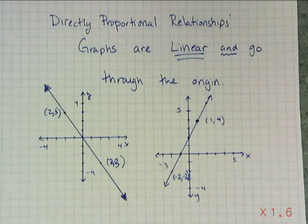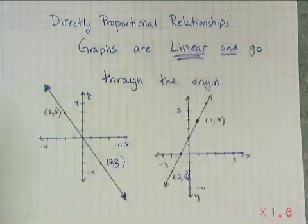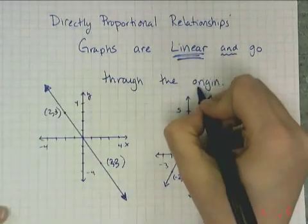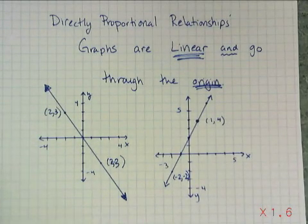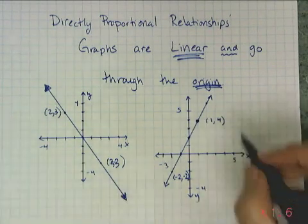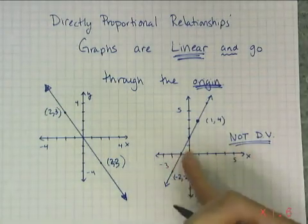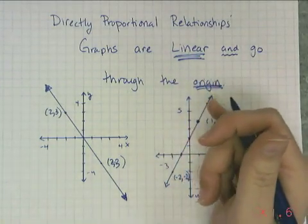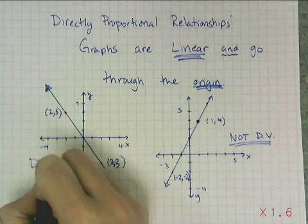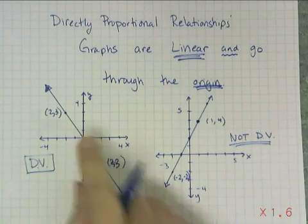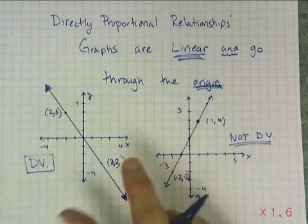Graphically, directly proportional relationships or direct variations are easy to spot. They must be lines — linear — and the second criteria is they must go through the origin. That's the only way for y over x to always be constant. A line that doesn't go through the origin is not a direct variation. A parabola going through the origin is also not a direct variation. Both conditions — linear and through the origin — are required.